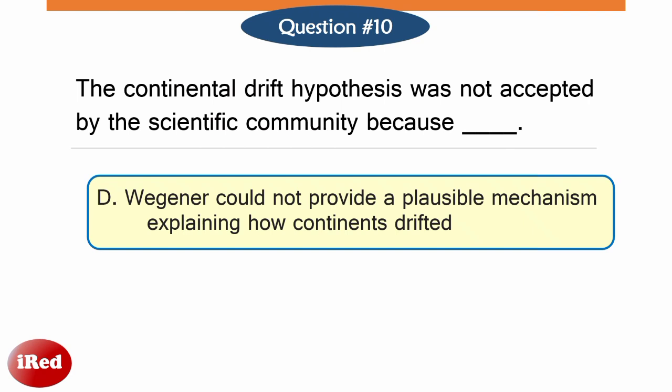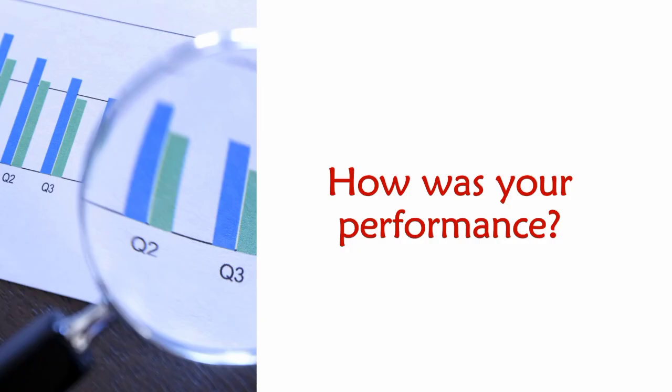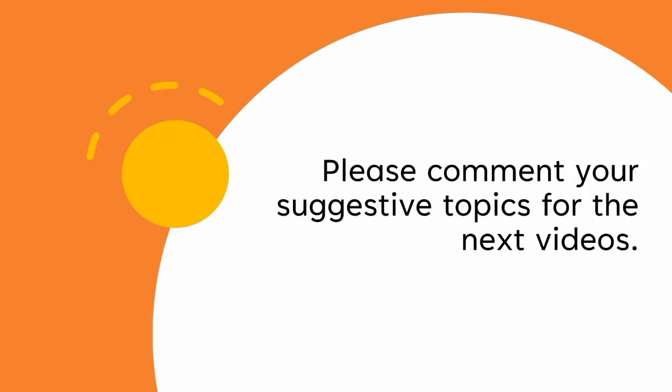Wegener's scientific idea, initially ridiculed, paved the way for the theory of plate tectonics, which explained how Earth's continents move. Unfortunately, Wegener never lived to see his theory accepted. He died at the age of 50 while on an expedition in Greenland.